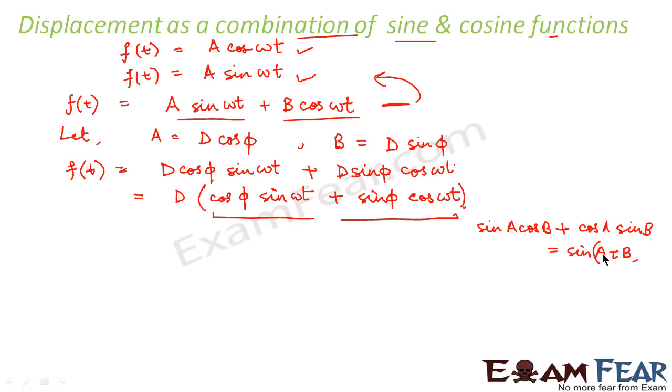We know that sin A cos B plus cos A sin B is nothing but sin(A + B). See, now you will know the usefulness of the formulas which you study in trigonometry. Therefore, we can write this as D sin(ωt + φ).